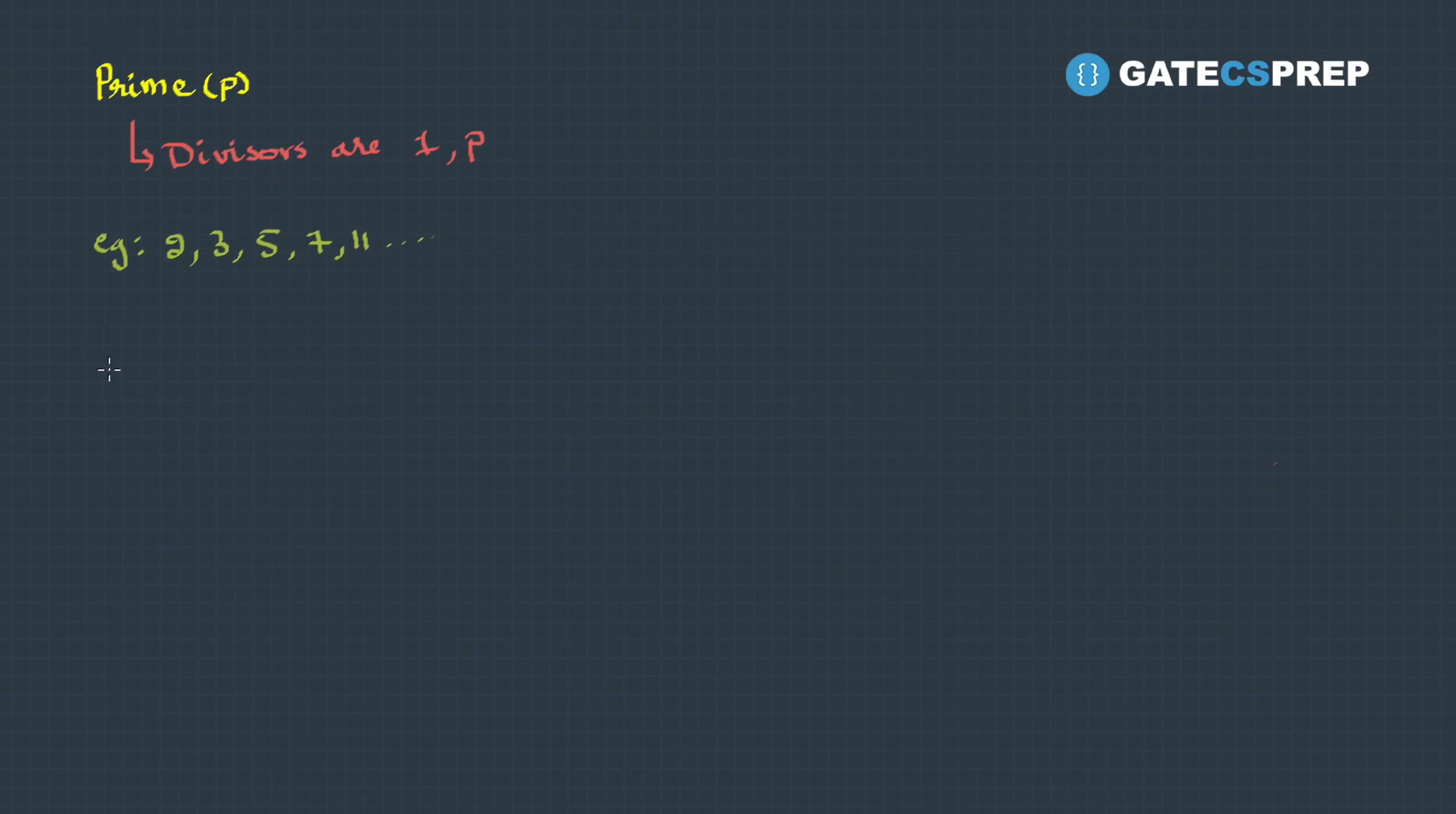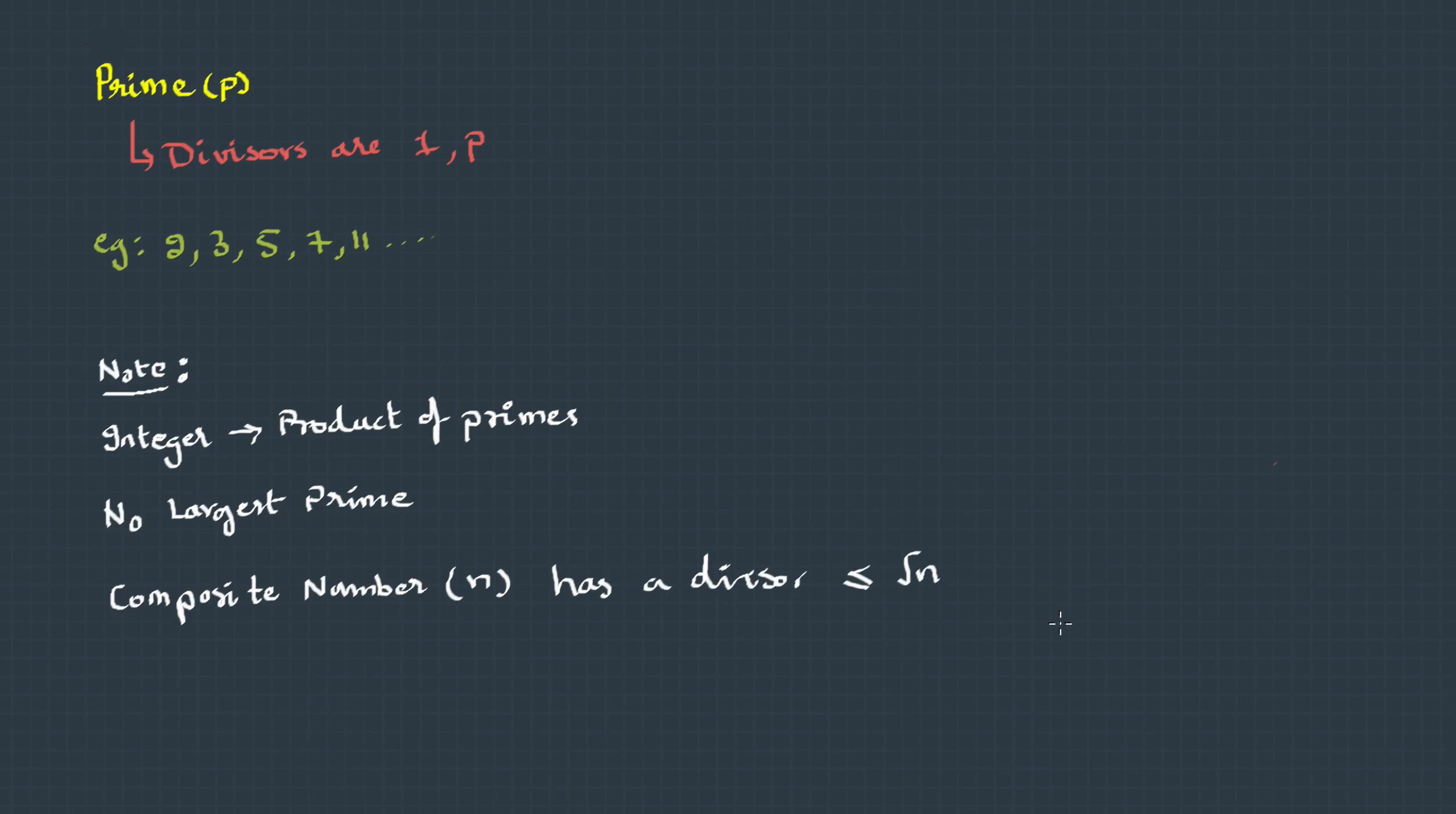There are few things to note about prime numbers. Every integer can be written as a product of primes, and there is no largest prime. There are infinite number of primes. When you pick up any composite number, it will definitely have a prime divisor which is less than root n. This condition is very helpful to identify if a number is prime or not.